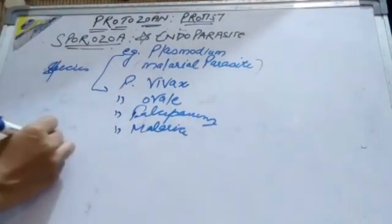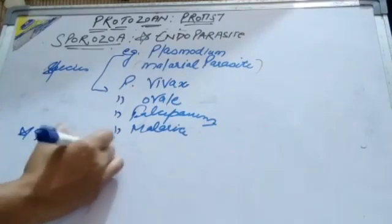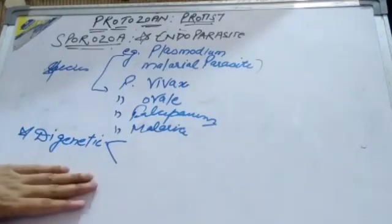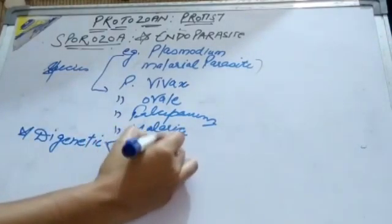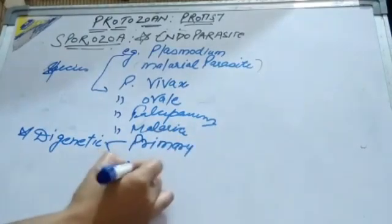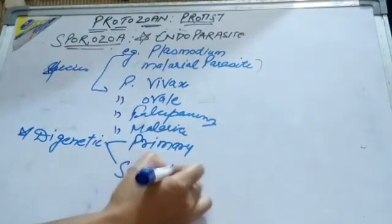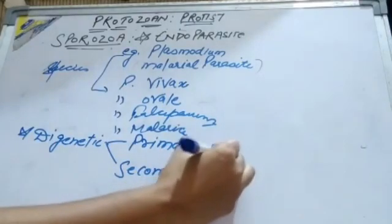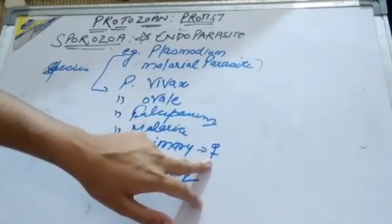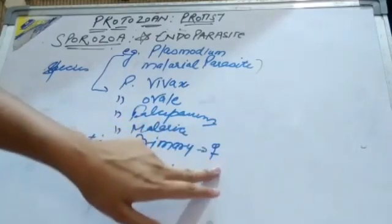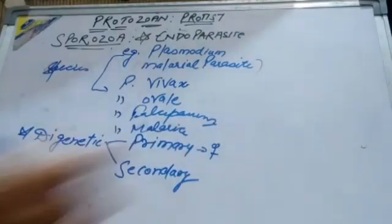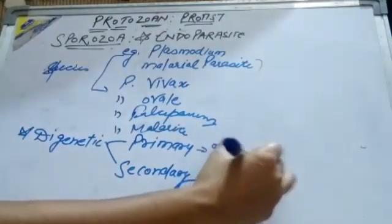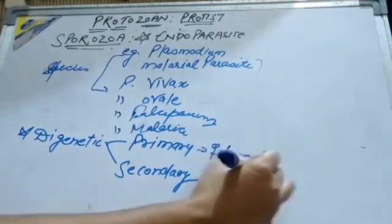The life cycle of Plasmodium is digenetic. Digenetic means it completes its life cycle in two hosts. The first one is the primary host and the second one is the secondary host.